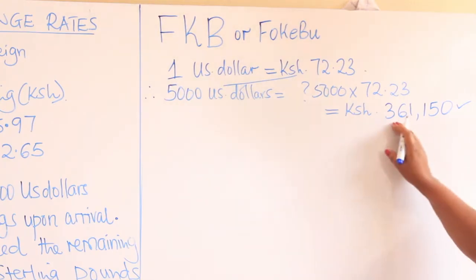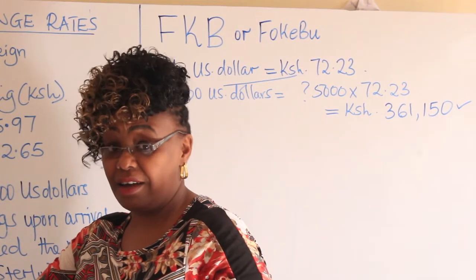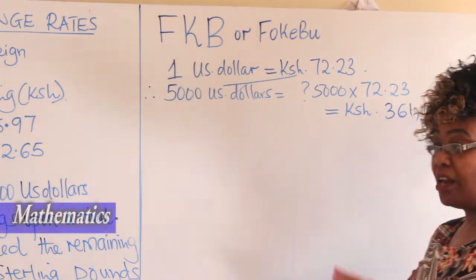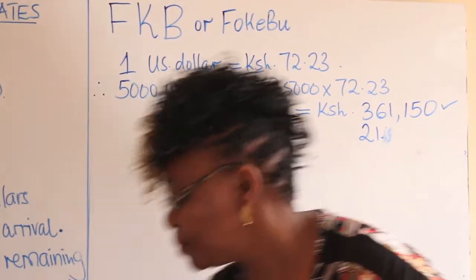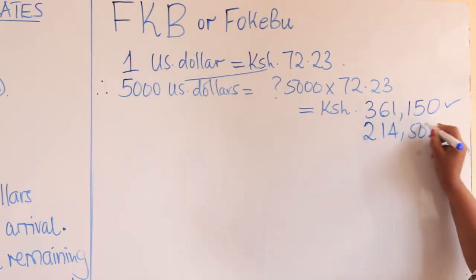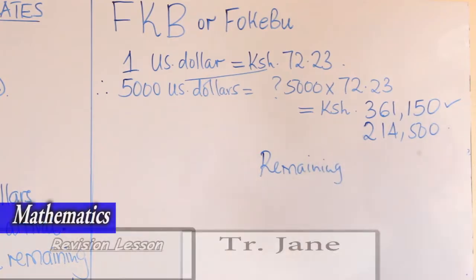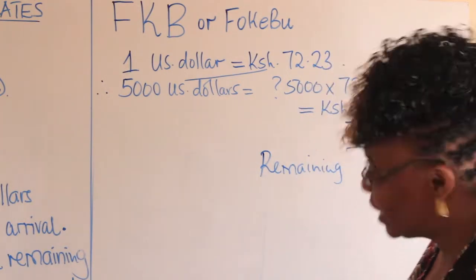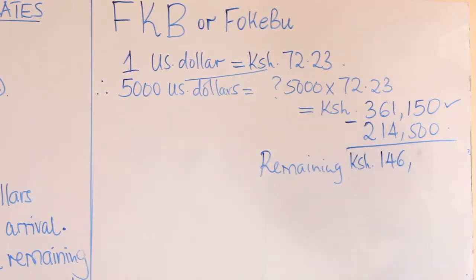He now has his money in Kenya shillings. We are told he spent Kenya shillings 214,500. To find the remaining amount, you subtract: 361,150 minus 214,500. The remaining is Kenya shillings 146,650.